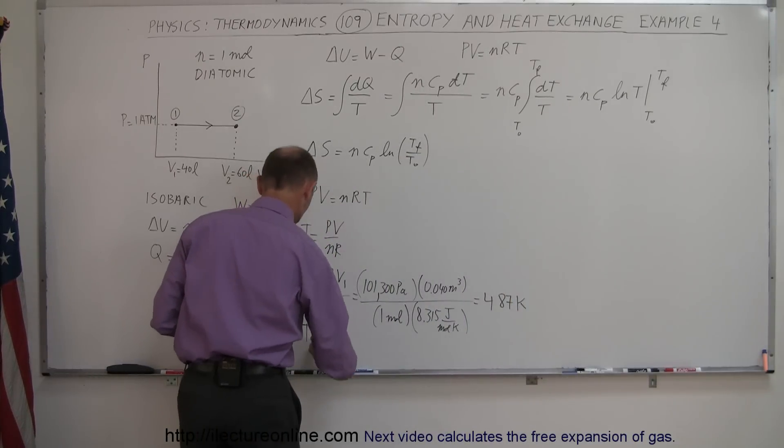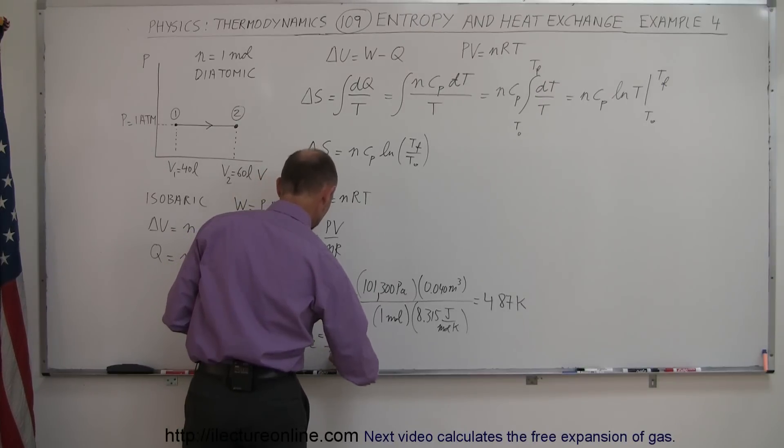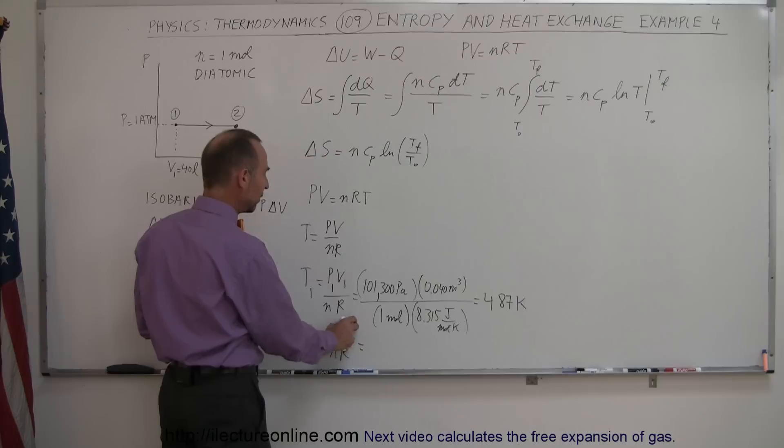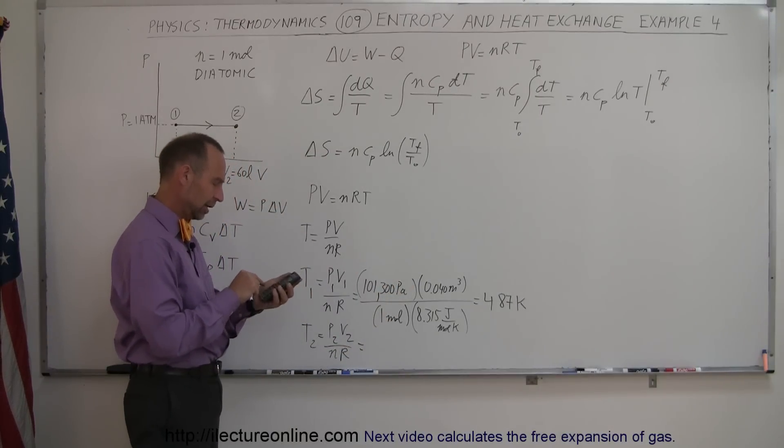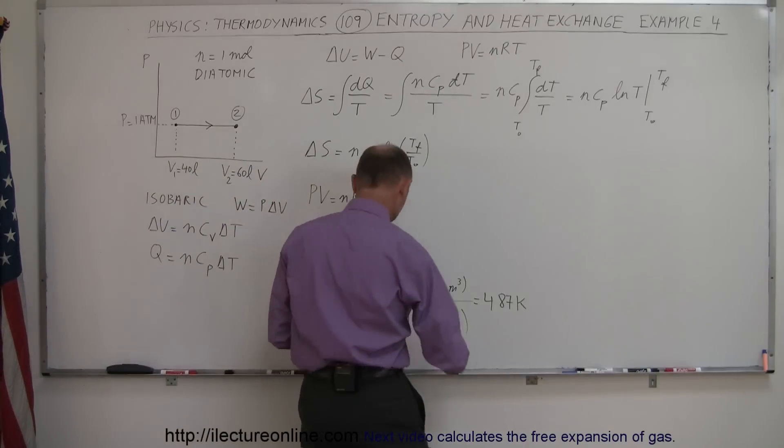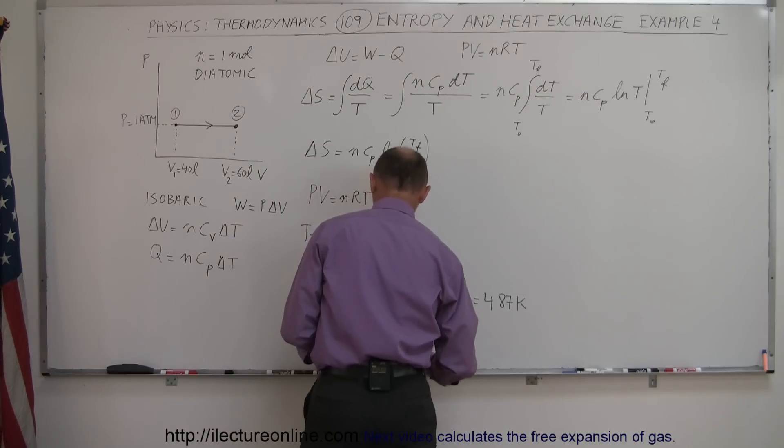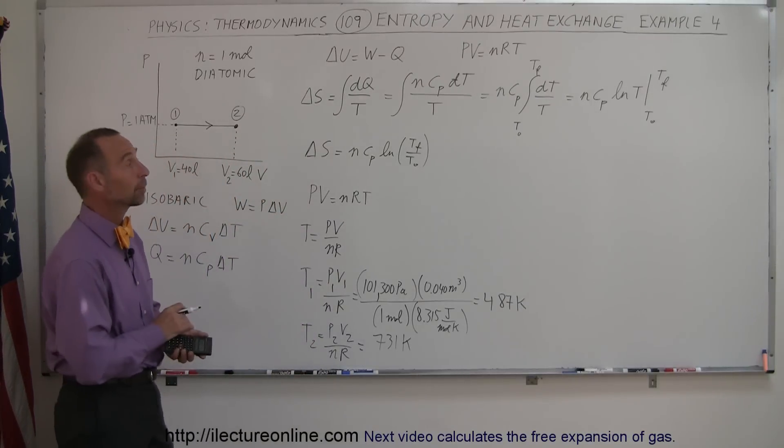All right, now temperature 2 is equal to P_2 V_2 divided by NR, and pressure is the same, N is the same, R is the same. V went from 0.4 to 0.6, so we divide that by 4 and multiply times 6, we get the value of 731 Kelvin. So that gives us the initial and final temperature in this thermodynamic process.